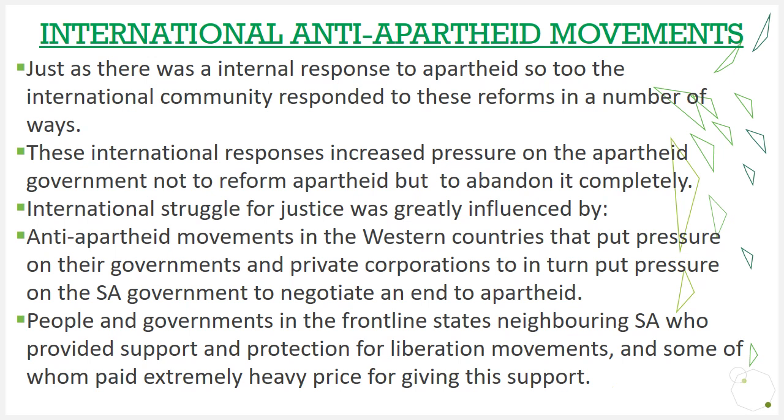What that means is they wanted the South African government not to just change apartheid a bit to suit them and carry on — they wanted it to abandon the whole apartheid system completely. The international struggle for justice was greatly influenced by the anti-apartheid movement in Western countries that put pressure on governments and private corporations to in turn put pressure on the South African government.